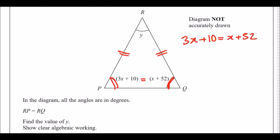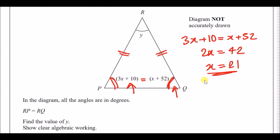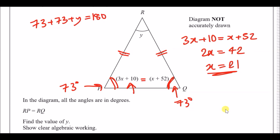Solving 3x + 10 = x + 52: subtract x and subtract 10 from both sides to get 2x = 42, so x = 21. Substituting x = 21 into the angle at Q: 21 + 52 = 73 degrees. Since it's isosceles, both base angles are 73 degrees. All angles in a triangle add to 180, so 73 + 73 + y = 180, giving 146 + y = 180, therefore y = 34 degrees.